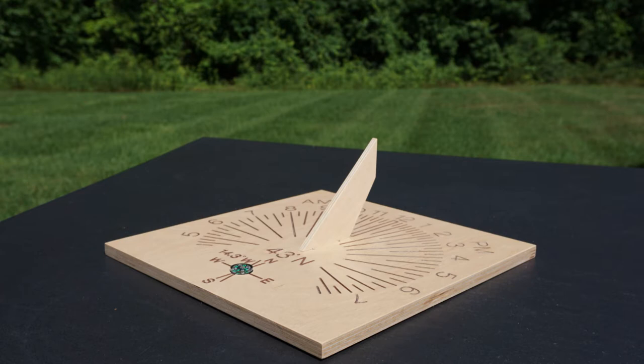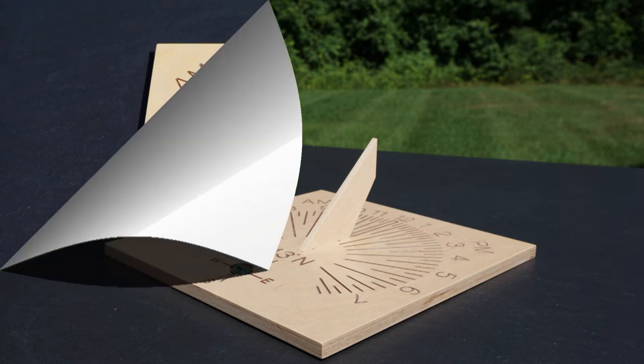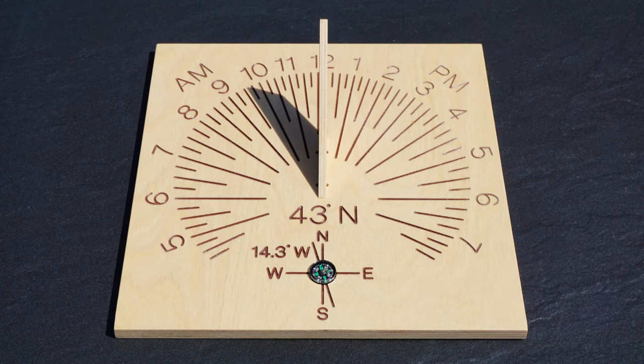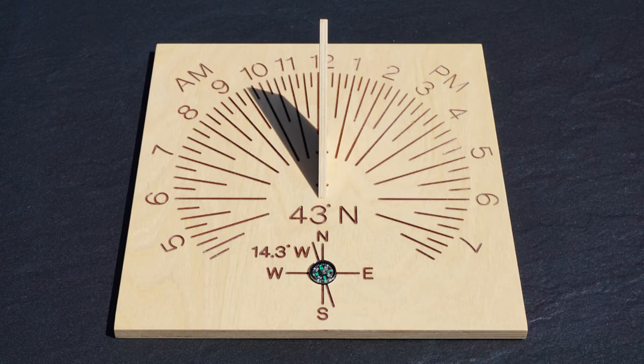When someone says sundial, the image of a horizontal dial is probably what pops into our mind. It is the most popular type of sundial. Its big advantage over the other types is that one dial surface can reflect all of the daylight hours throughout the year.